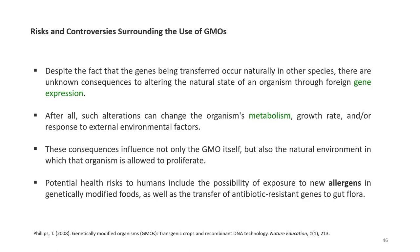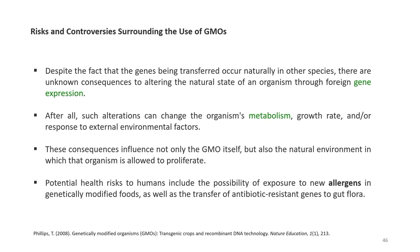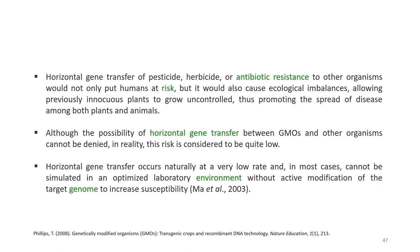What are the risks and controversies surrounding the use of GMOs? Despite the fact that the genes being transferred occur naturally in other species, there are unknown consequences to altering the natural state of an organism through forced expression using recombinant DNA technology. Such alterations can change the organism's metabolism, growth rate, or response to external environmental factors, influencing not only the GMO itself but also the natural environment. Potential health risks to humans include exposure to new allergens in genetically modified foods, as well as the transfer of antibiotic-resistant genes to gut flora. Horizontal gene transfer of pesticide, herbicide, or antibiotic-resistant genes to other organisms would not only put humans at risk but would also cause ecological imbalances, allowing previously innocuous plants to grow uncontrolled, thus promoting the spread of disease among both plants and animals.